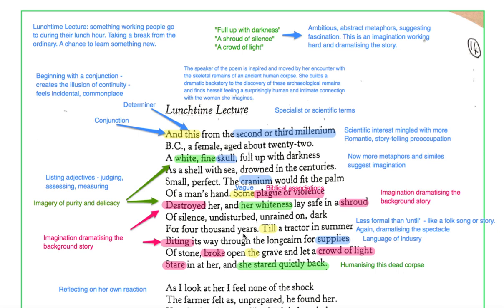Till a tractor in summer, biting its way through the long cairn for supplies of stone, broke open the grave and let a crowd of light stare in at her and she stared quietly back. Now she's imagining and dramatizing this key moment when the archaeological remains were discovered. The tractor bites its way through the long cairn. The long cairn, a cairn is a tomb with a pile of stones on the top and a long cairn is clearly a type of cairn so this was the underground tomb where the body was discovered. And all over the British Isles there are cairns which are often found in agricultural land and in this case that was the case here and so the tractor ploughing up the ground has accidentally unearthed this body.